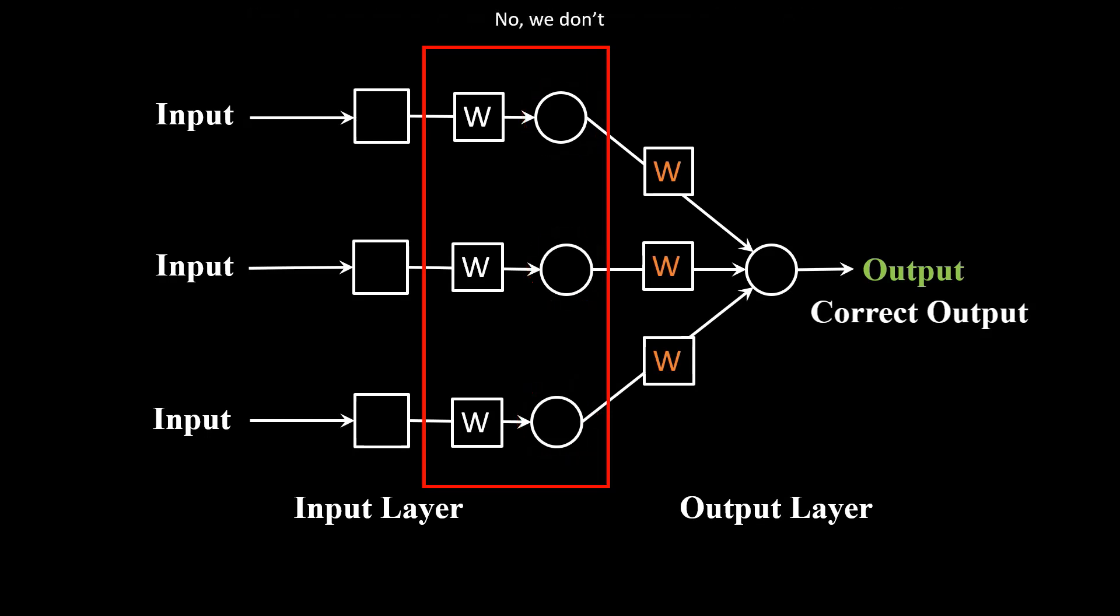No, we don't. The correct output we have is the correct output of the output node. It is not for these hidden nodes. That means we cannot update the weights of these hidden nodes.